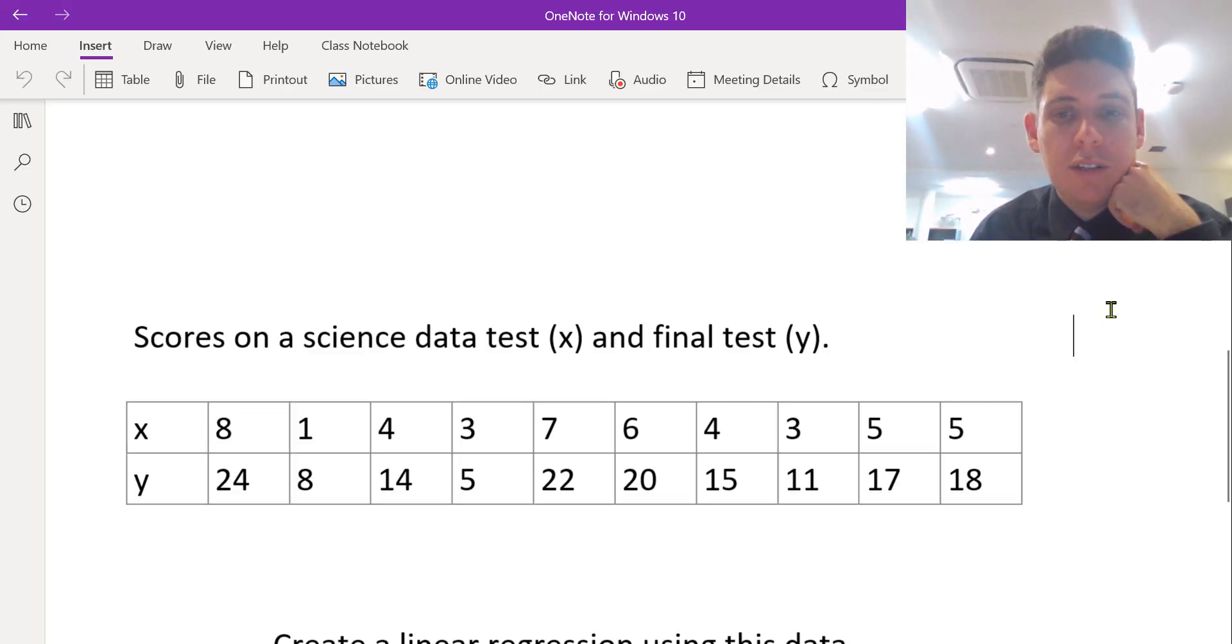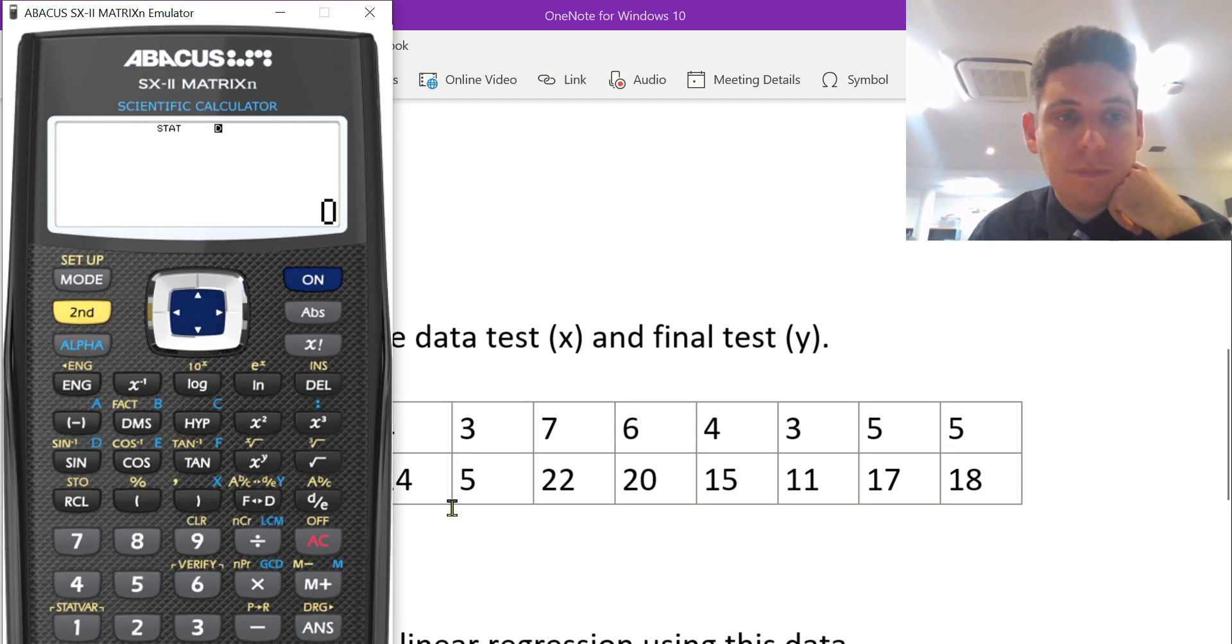All right, so we're going to do the same question. I've got 10 students. I've got the X values, which is the 10 students data test values, and those 10 students also their final results on their science tests. So I'm going to do linear regression of this data on an abacus calculator. So to do this, we need to put the data into our abacus calculator.